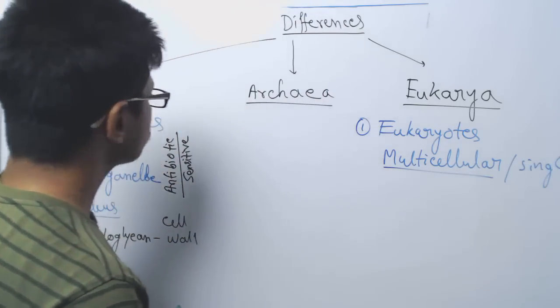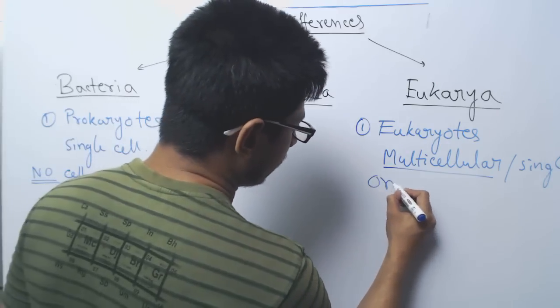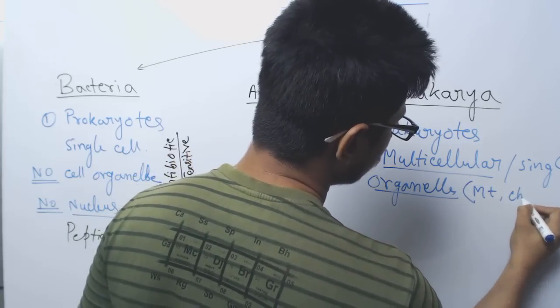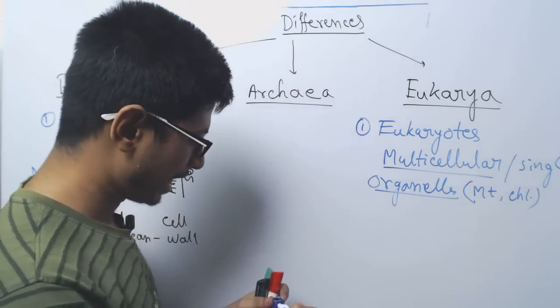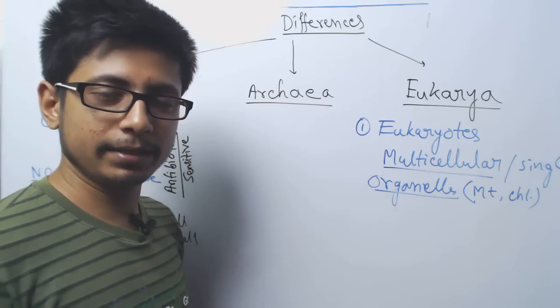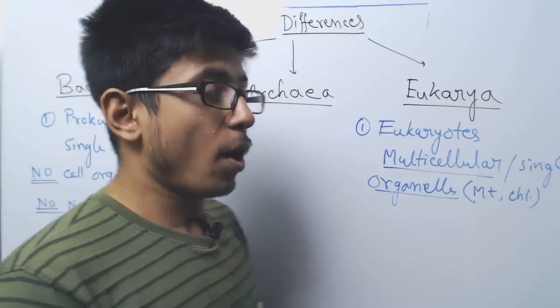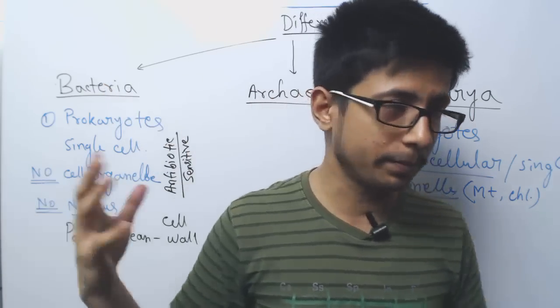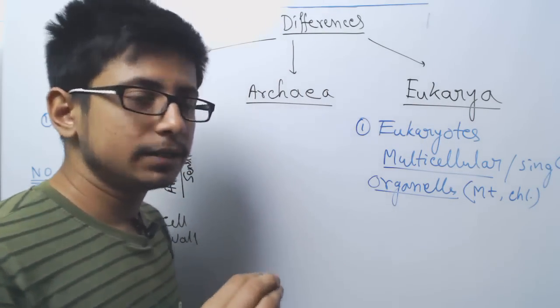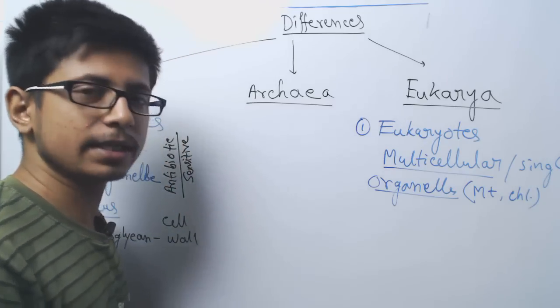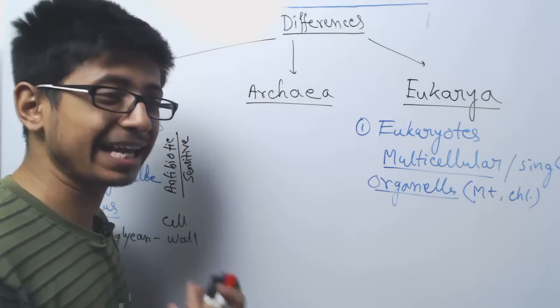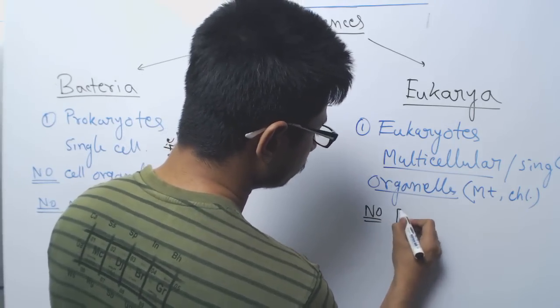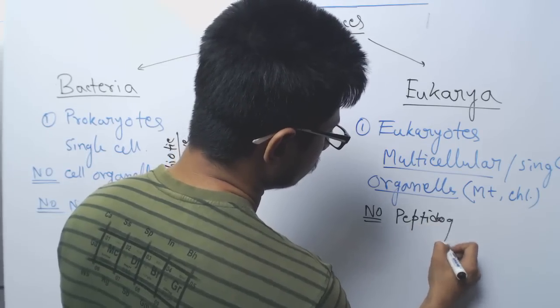They have organelles, membrane-bound organelles like mitochondria and chloroplasts. Eukaryotes have cell membrane and cell wall. All prokaryotes have cell wall, but not all eukaryotes have cell wall. They have cell membrane. Some of them have cell walls - for example, plants have cell walls. Eukaryotic animals do not have cell wall, they have cell membrane. Even if they have cell wall, there is no peptidoglycan found.